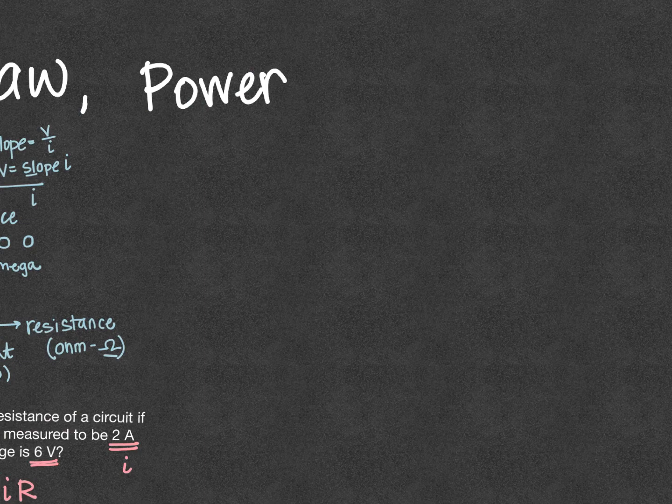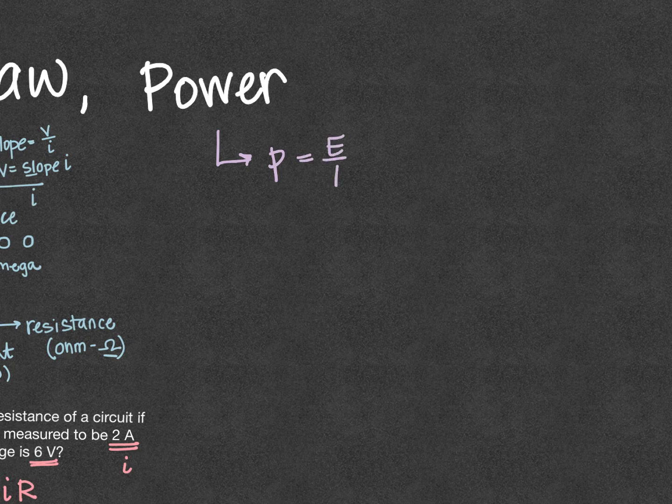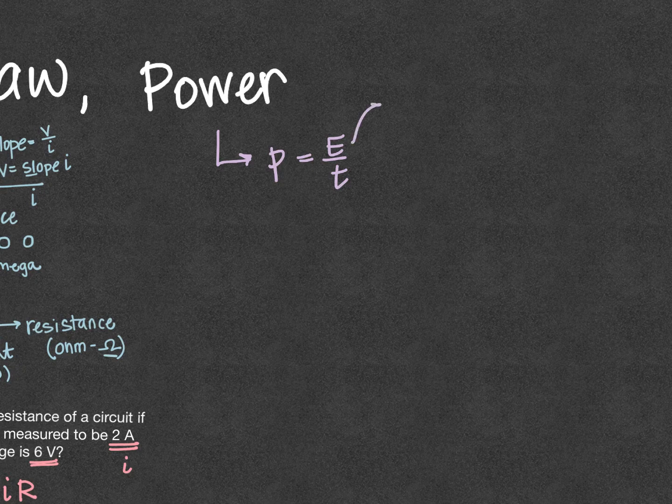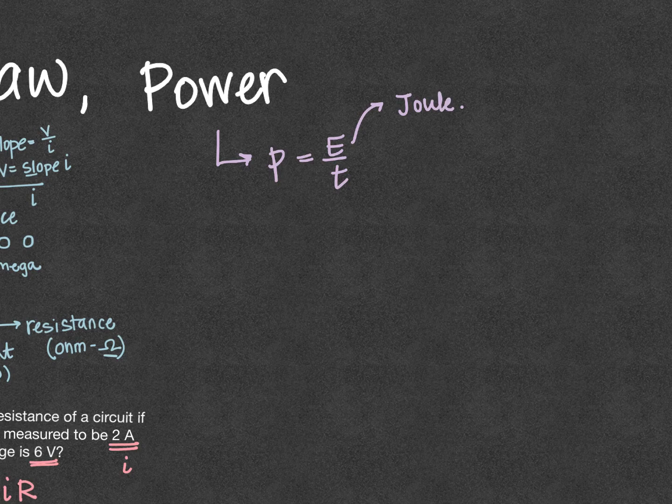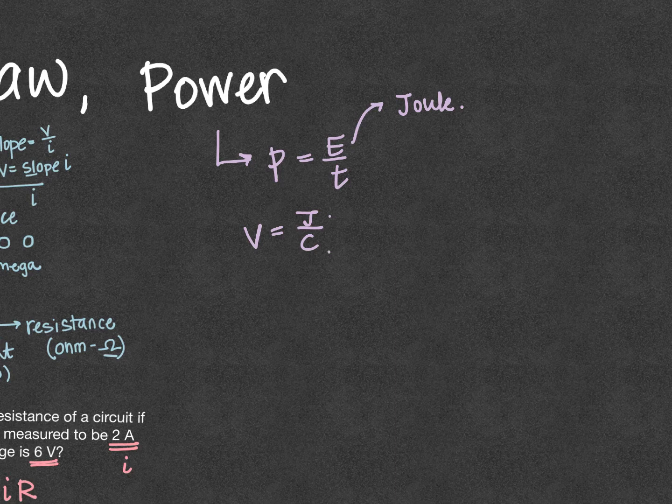Now just like before when we studied power in mechanics, power is the amount of energy transferred in a particular amount of time. And a volt is actually a joule per coulomb. It tells us how much energy per charge we will have due to this particular battery.